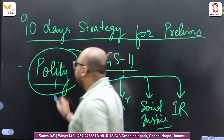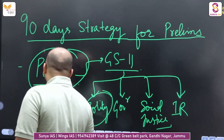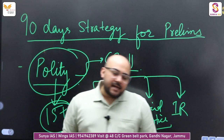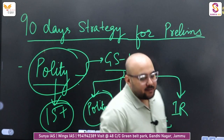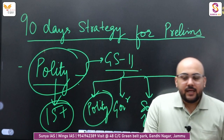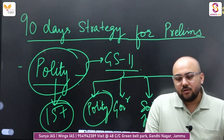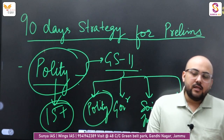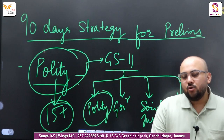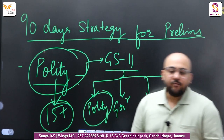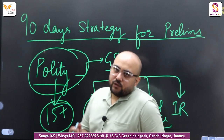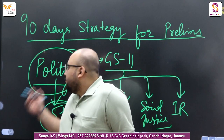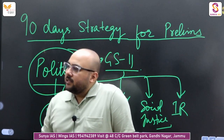The good thing about polity is that 15 questions come in prelims. The bad thing is that there is a little ambiguity in the language, so the options might be a little closer to each other — a fine difference of 19 versus 20. That is where we need to be precise.